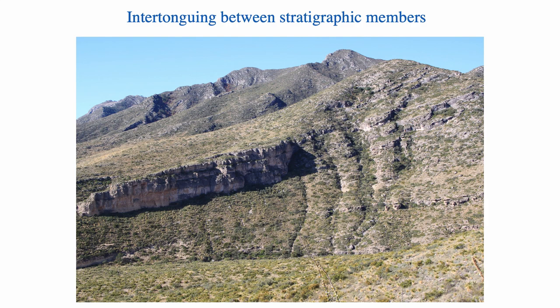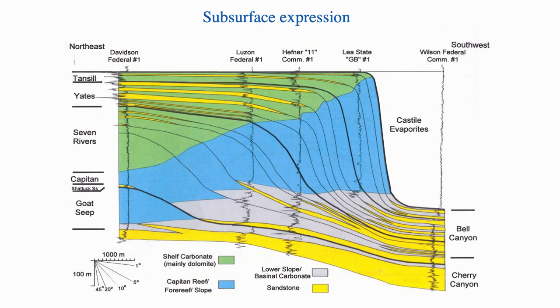Here is an example of inter-tonguing in Texas in the Permian Basin. Different members of a limestone/clastic deposit are shown: the Lamar Member, which is the slope of a carbonate platform, and below it the Cherry Canyon Tongue, which is a deeper clastic sand. These two lithologies inter-tongue at a relatively small scale — about 60 meters of deposits at outcrop. In the subsurface, sands from the basin are mixed with slope carbonates, illustrating the value of understanding the distribution of sand and carbonates for finding water, oil, or other resources.